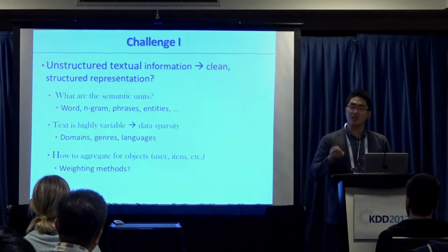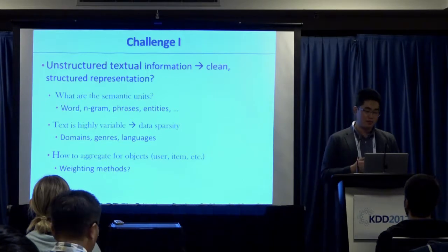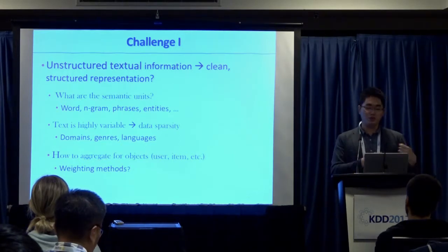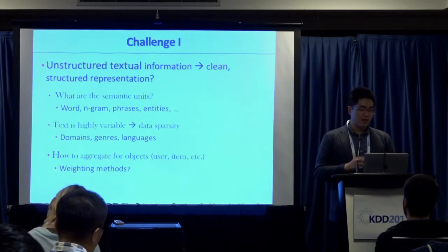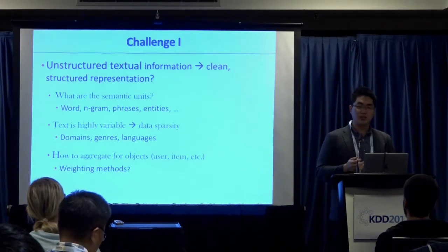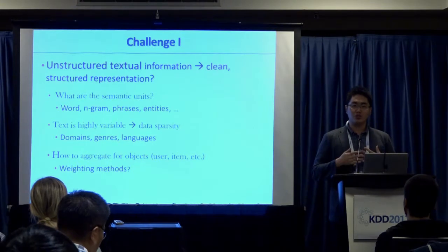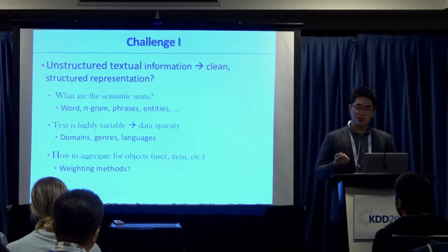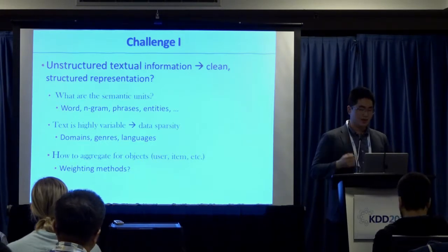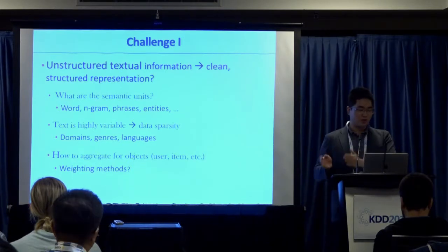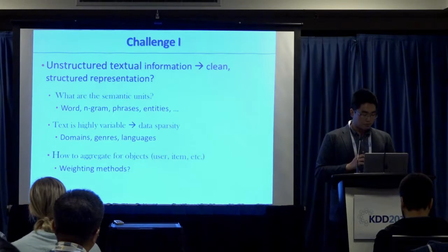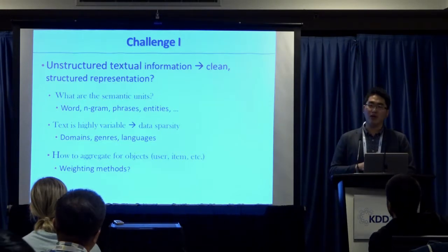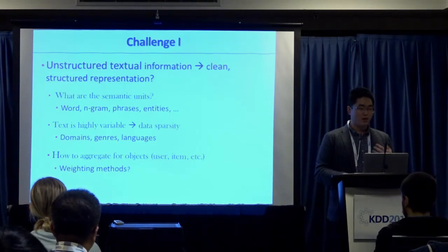The first question is: what are the basic semantic units to use when analyzing text? People might say use words as a bag of words, but others argue for n-grams, phrases, or entities. Once you define the basic semantic units, the next question is data sparsity — because language is highly variable. People use a variety of ways to talk about the same thing: one string can have different meanings, and different strings can have the same meaning. Additionally, what is the right weighting method — is TF-IDF best, is BM25 best?